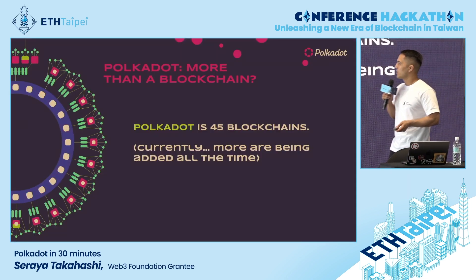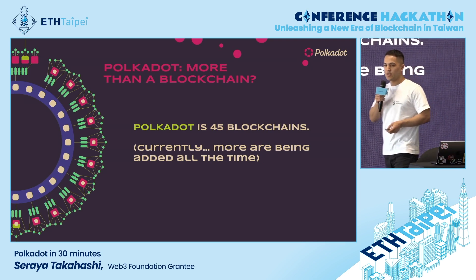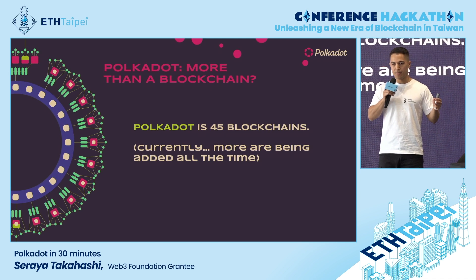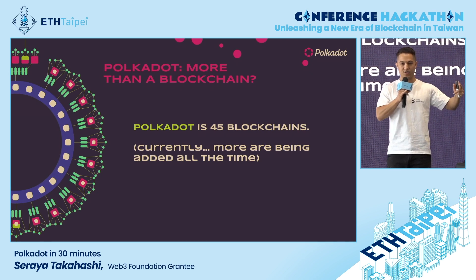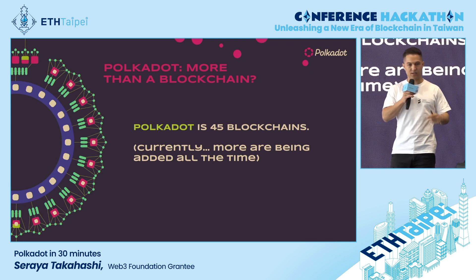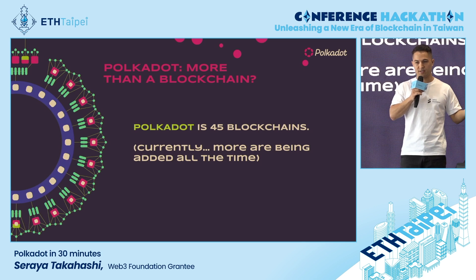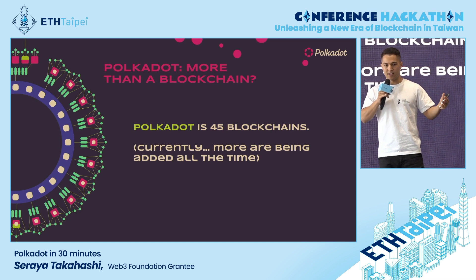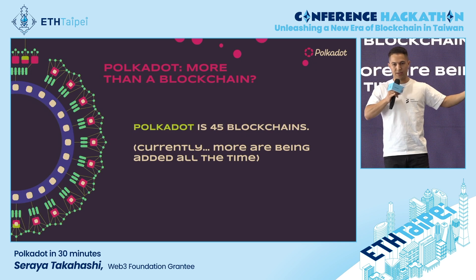Polkadot is actually more than just a blockchain, because by definition it is 45 blockchains currently — a whole network of blockchains. All these Layer 1 blockchains roll up to something called the relay chain, which is the main chain that connects all the parachains. They just commit their state root to the relay chain, and in return they get shared security, so they don't need their own huge validator sets — just a handful, because the relay chain is secure.